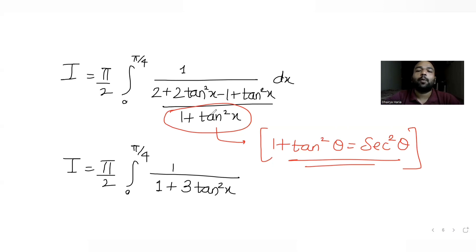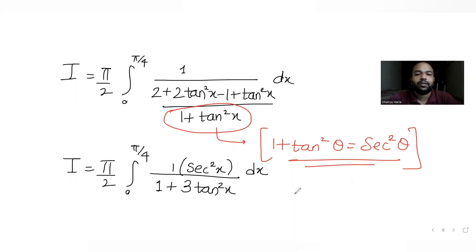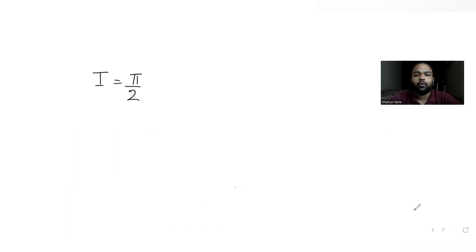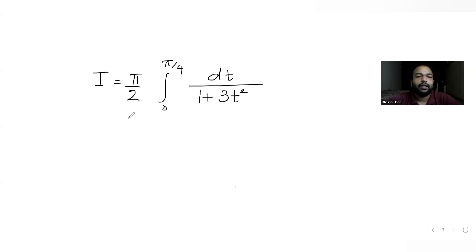Since 1 + tan²x = sec²x, the expression becomes sec²x/(1 + 3tan²x). So I = (π/2) ∫[0 to π/4] sec²x/(1 + 3tan²x) dx. Now substituting t = tanx, so dt = sec²x dx. When x = 0, t = 0; when x = π/4, t = 1. The integral becomes I = (π/2) ∫[0 to 1] dt/(1 + 3t²).